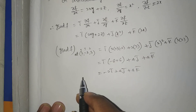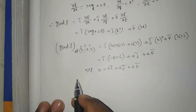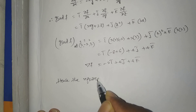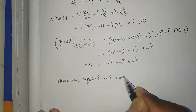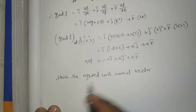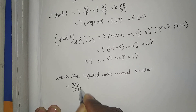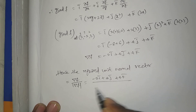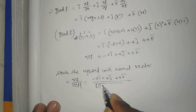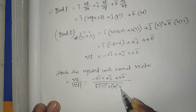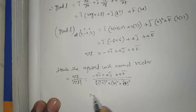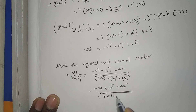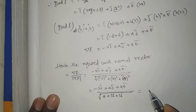Hence the required unit normal vector equals del F divided by mod del F. Here del F equals minus 2 i-bar plus 4 j-bar plus 4 k-bar, and mod del F equals the square root of (minus 2 squared plus 4 squared plus 4 squared), which equals root of (4 plus 16 plus 16) equals root 36 equals 6.